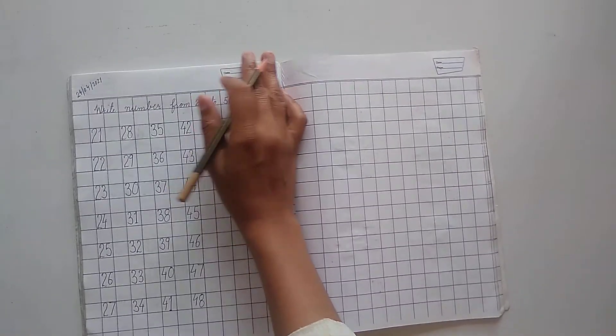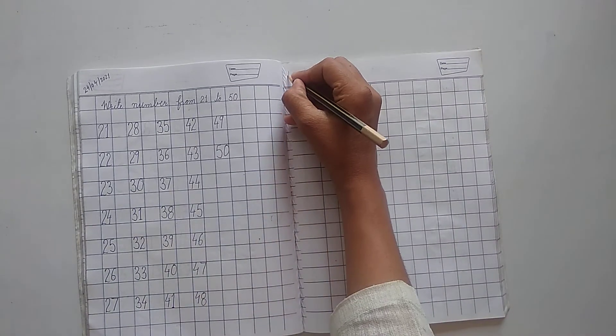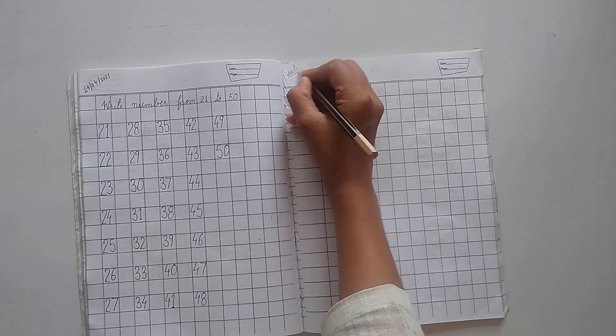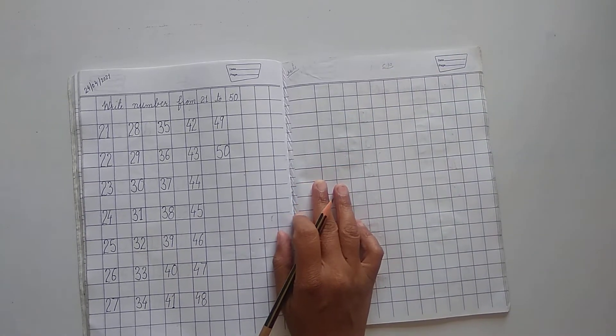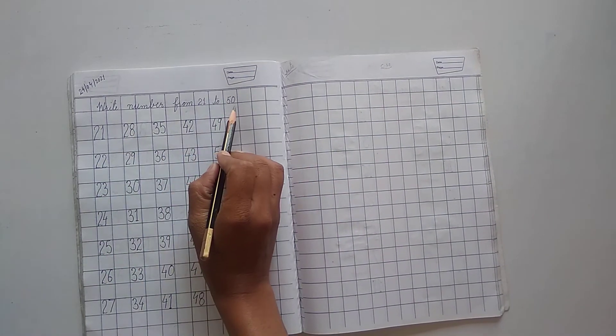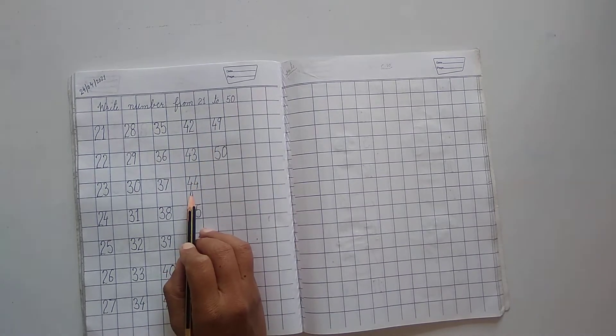So, let's start. Here, let's mention CW. Today's topic, number. Write number from 21 to 50. So, I can only say 21 to 50.